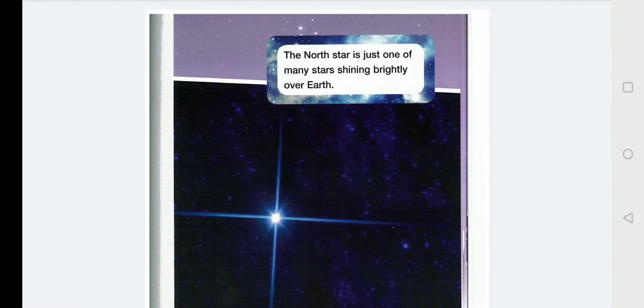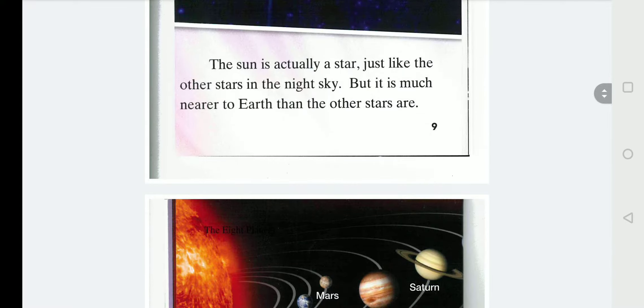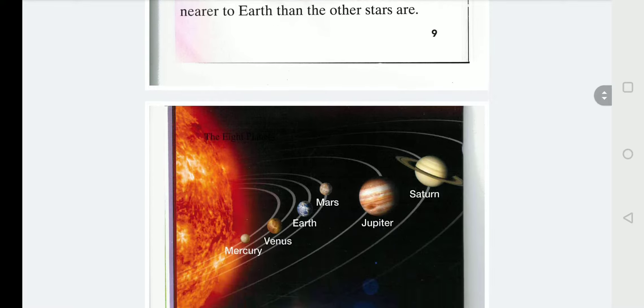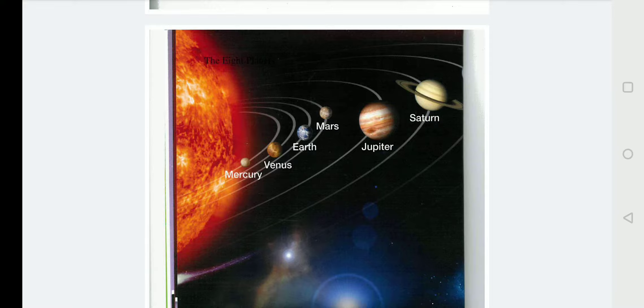The north star is just one of many stars shining brightly over Earth. The sun is actually a star. Just like the other stars in the night sky. But it is much nearer to Earth than the other stars are. Here we have a picture of all the stars next to the sun. Stars are referred to as planets. You can see Earth and you can see the size of the other planets compared to Earth.